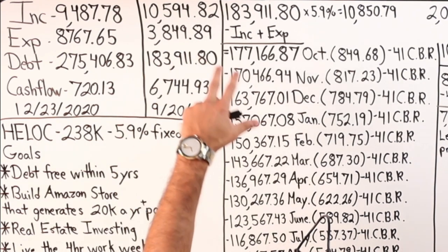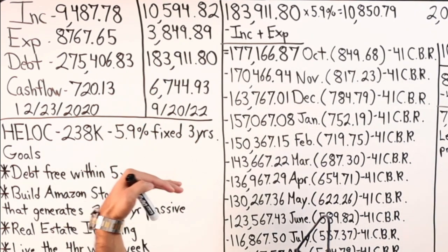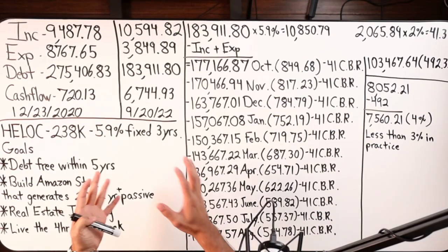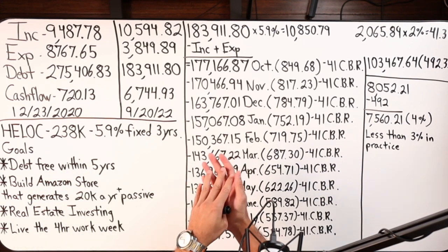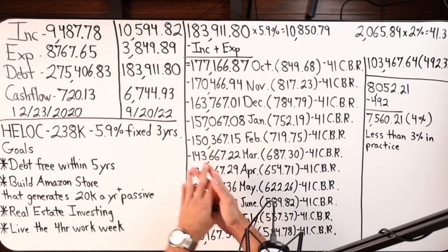Debt is at $183,911.80 and that is just one debt which is the first lien HELOC. So they replaced their first lien mortgage, whatever the balance was, and they shifted it over to a first lien HELOC which is what you see right here.